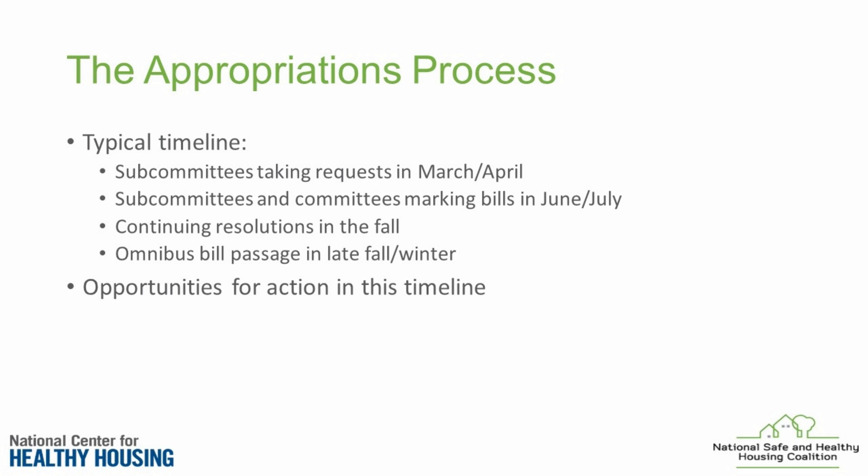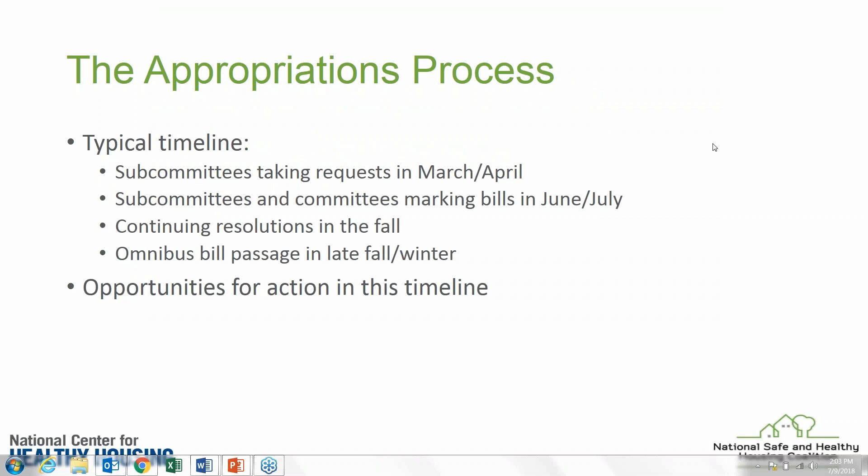The appropriations process is a fancy word for how we get money to spend on things that we care about. The federal government has a budget, and the money spent in that budget is decided upon by members of Congress. The president starts out at the beginning of the year identifying his or her priorities and presenting a budget to Congress. However, the president doesn't actually have the power of the purse — members of Congress do.